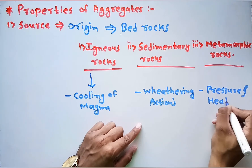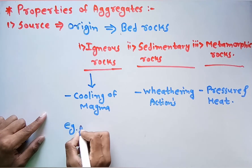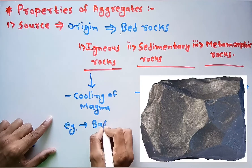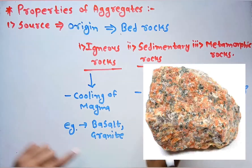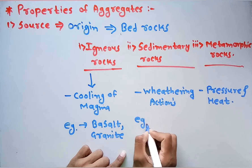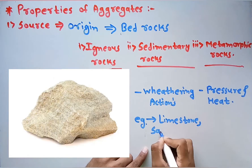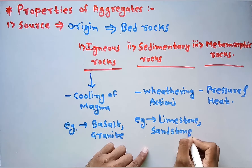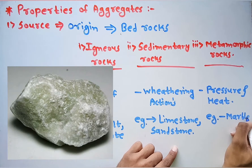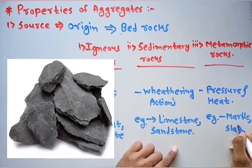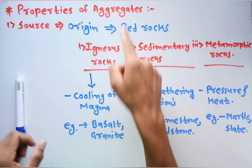The examples of igneous rocks are basalt or granite. In the case of sedimentary rocks, the examples are limestone or sandstone. The examples of metamorphic rocks are marble and slate. These are the basic sources or origins of the various aggregates used in construction activities.